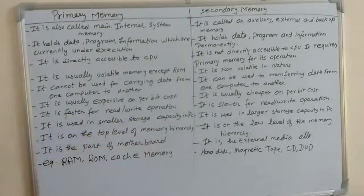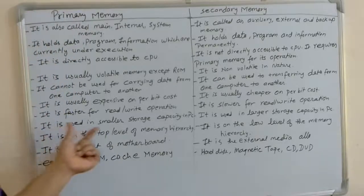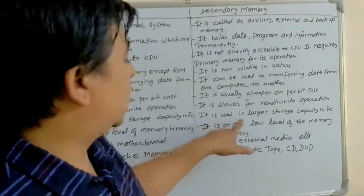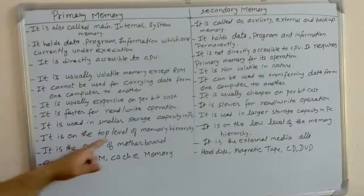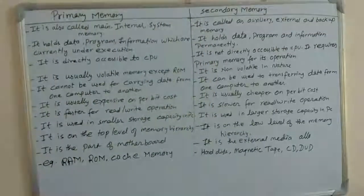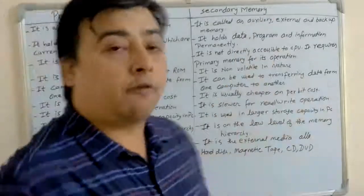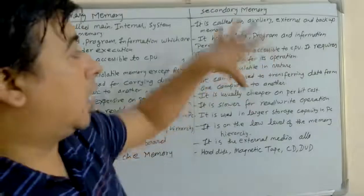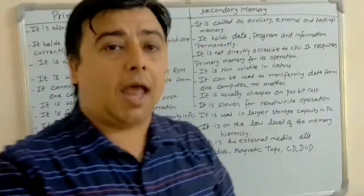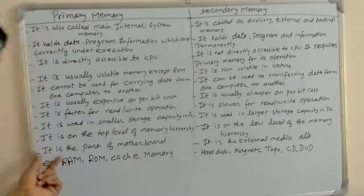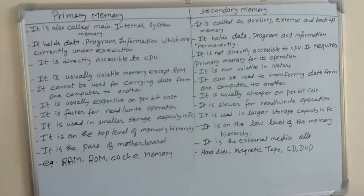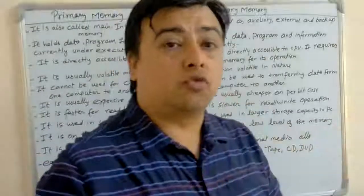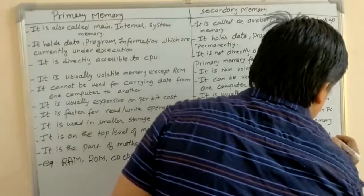Primary memory is used in smaller storage capacity in a PC, but to store a huge amount of data we use secondary memory, so it is used in larger storage capacity. In memory hierarchy, the top level includes registers, cache memory, and RAM. Secondary memory is at the lower level of the memory hierarchy. Primary memory is part of the motherboard, but secondary memory is external media attached to the motherboard.